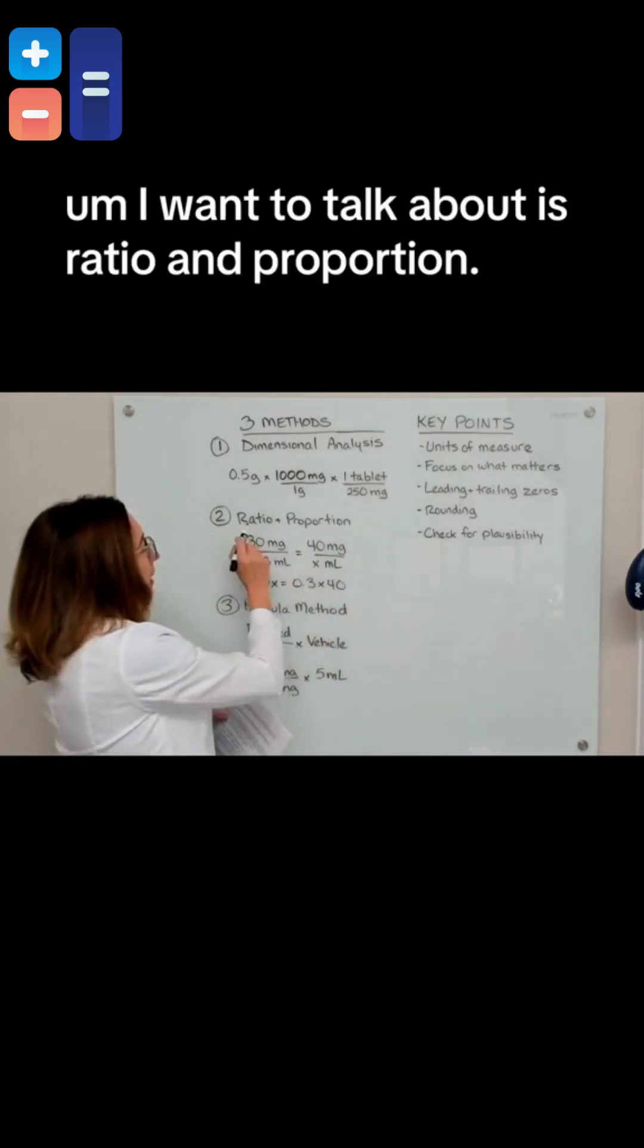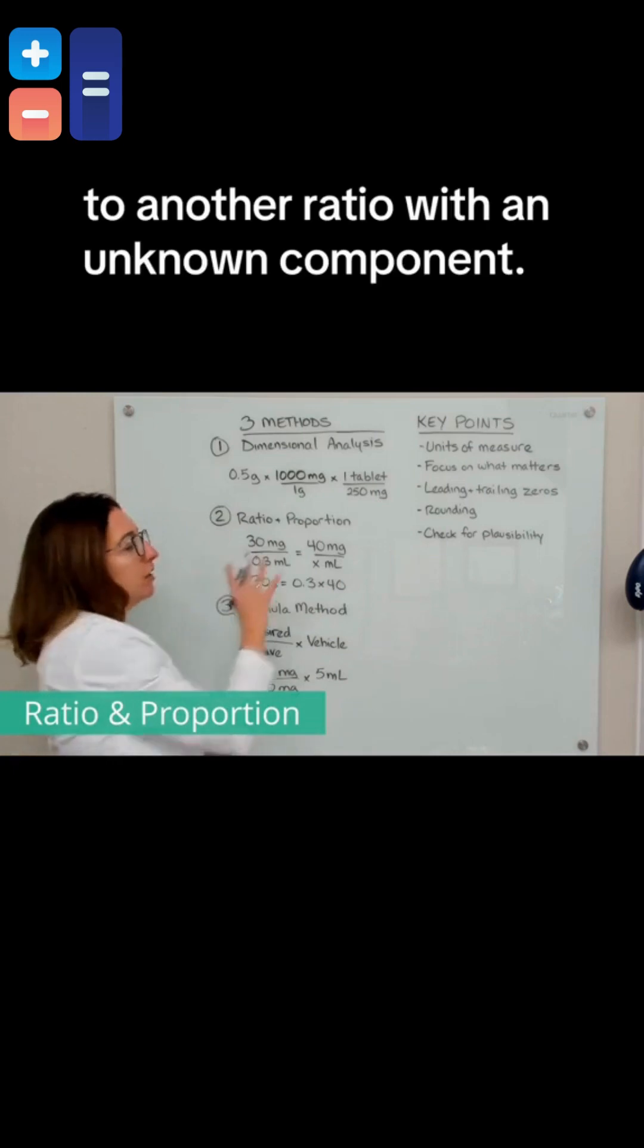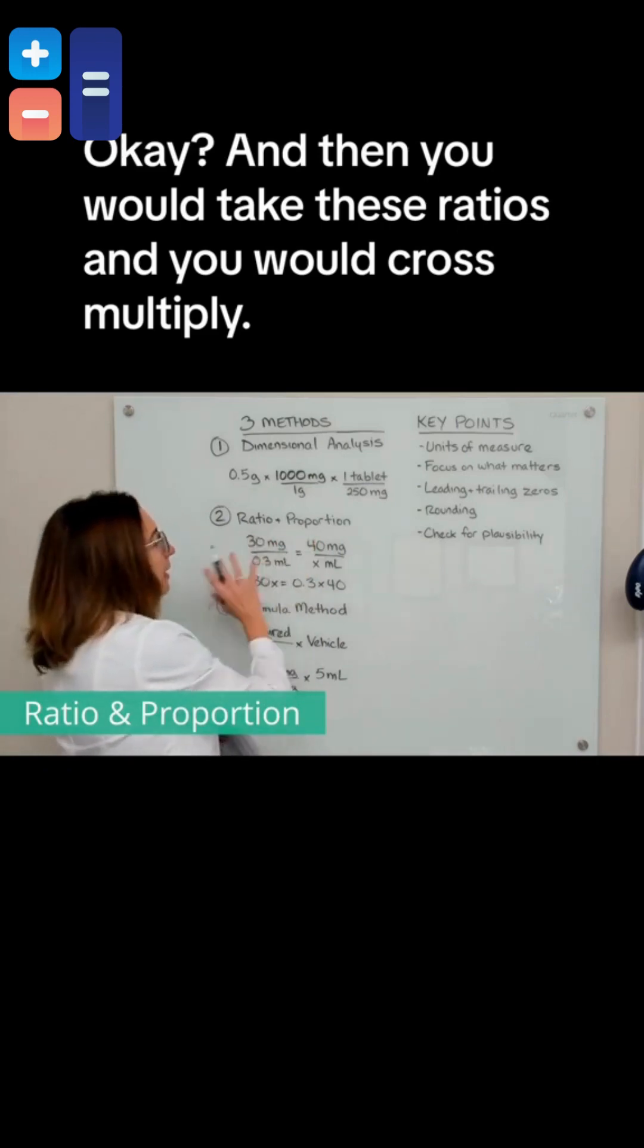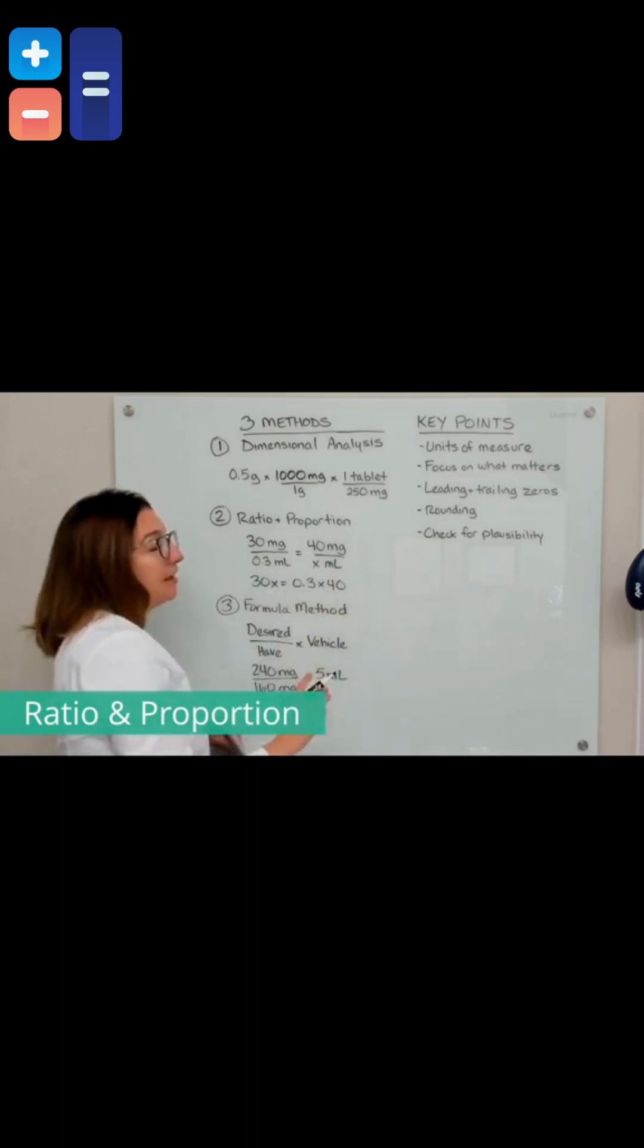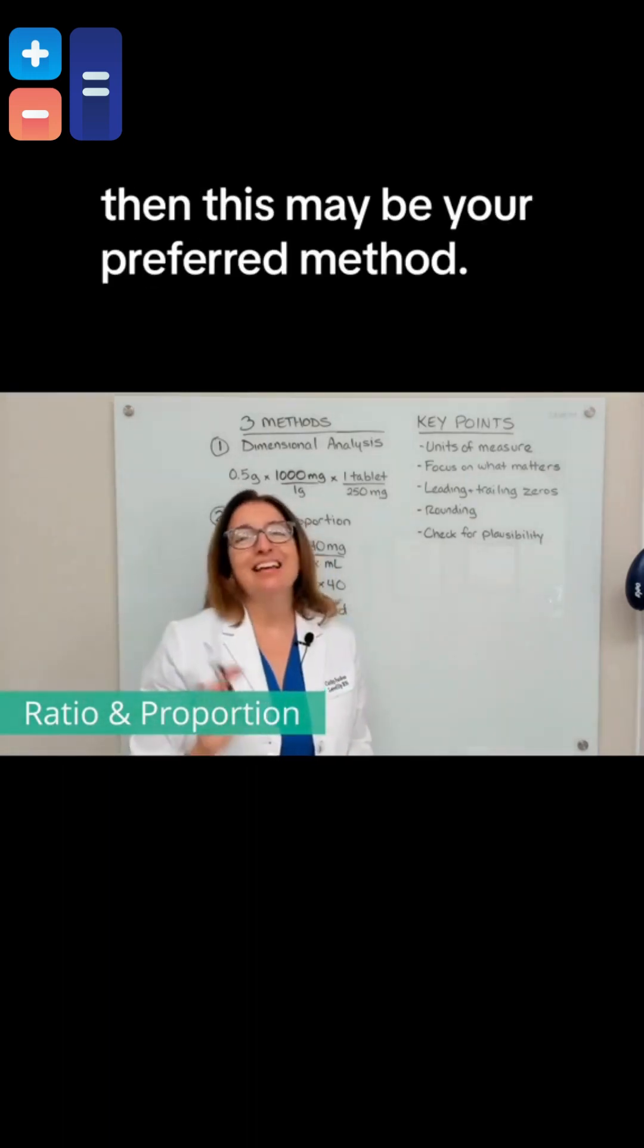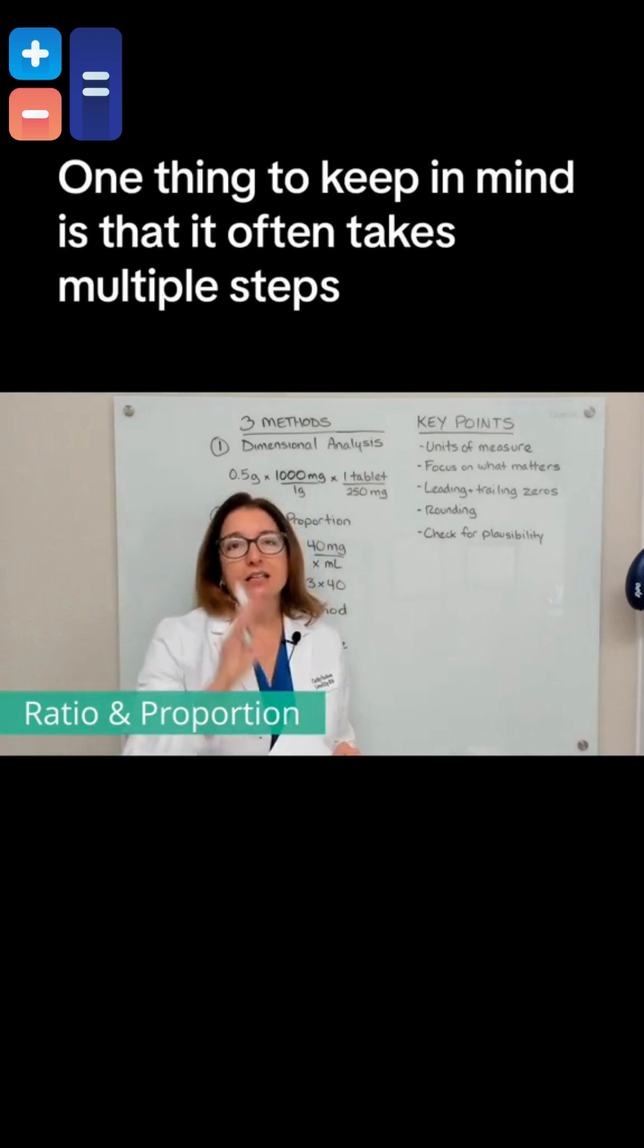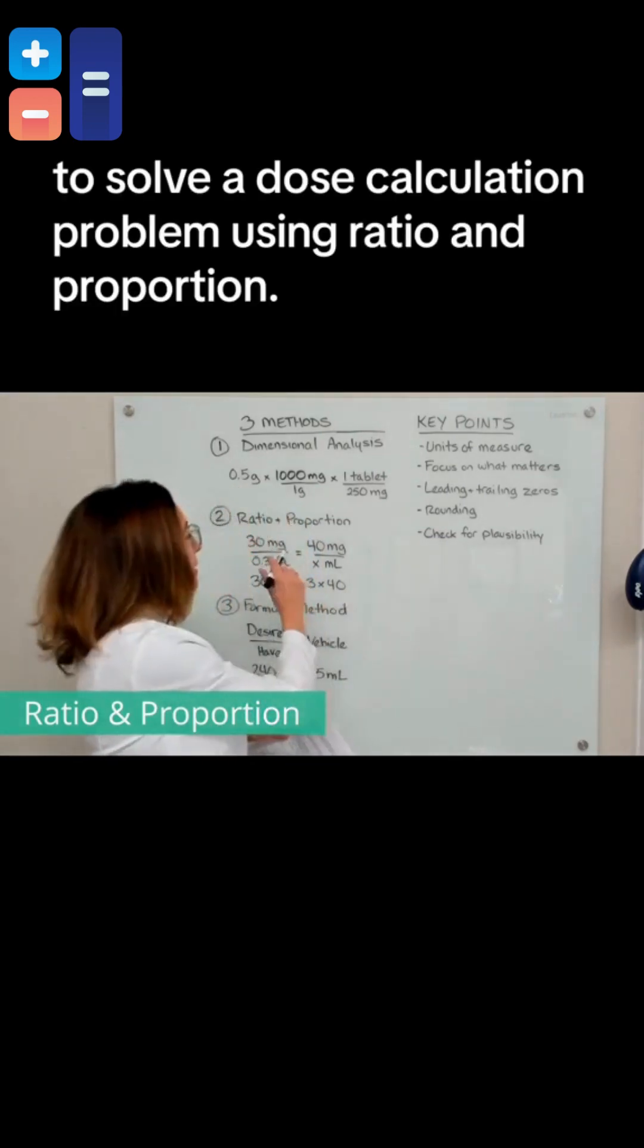The second method I want to talk about is ratio and proportion. This is where you compare a known ratio to another ratio with an unknown component. Then you would take these ratios and you would cross multiply. So I would take 30 times X and 0.3 times 40, and then you would solve for X. If you are a fan of algebra, then this may be your preferred method. One thing to keep in mind is that it often takes multiple steps to solve a dose calculation problem using ratio and proportion.